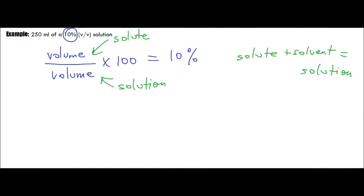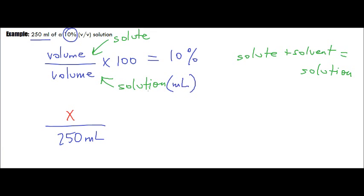Anyhow, for the second example we've got 10% VV. Remember we said we're going to take VV and have it dictate our equation — it means volume over volume. We're going to multiply it by 100 to give us a percent, and that percent is 10%. The top represents the solute, the bottom represents the entire solution. The volume of our solute is what we're trying to find — that's our x — and we divide it by the volume of the solution given, which is 250 milliliters, then multiply by 100, which equals 10%.